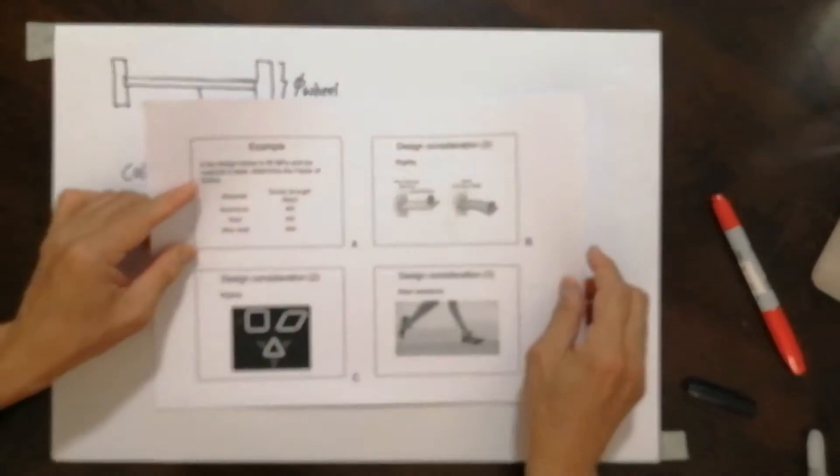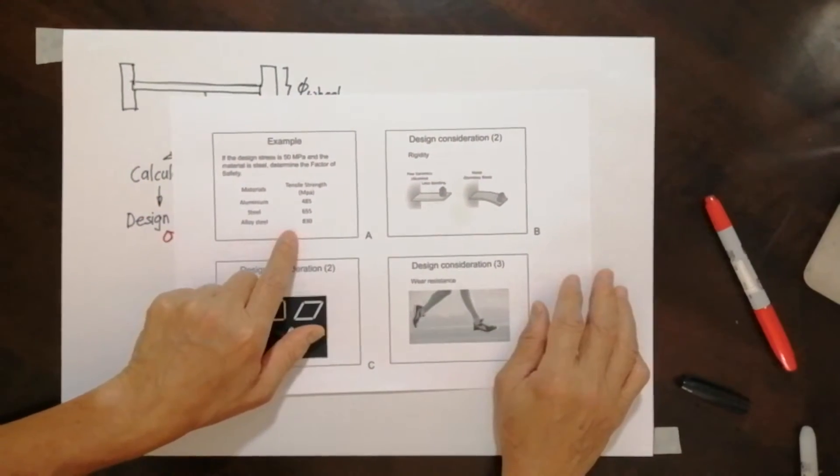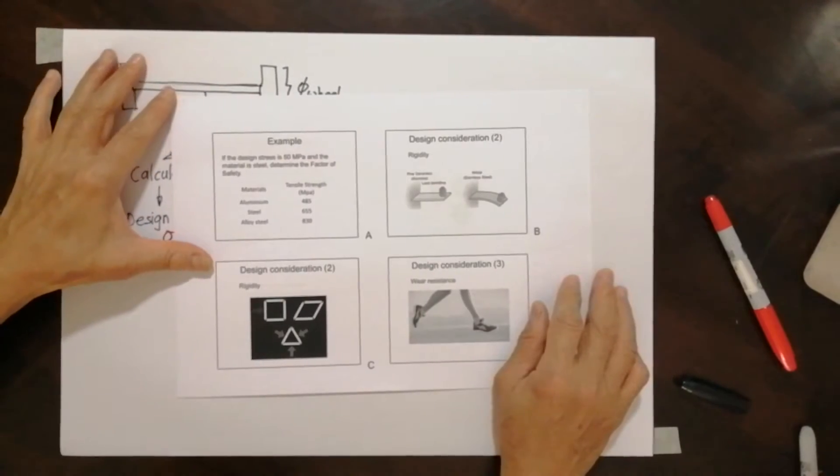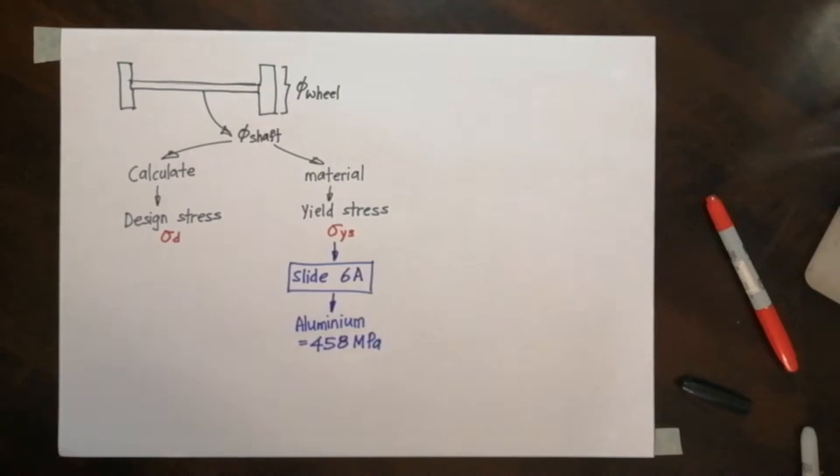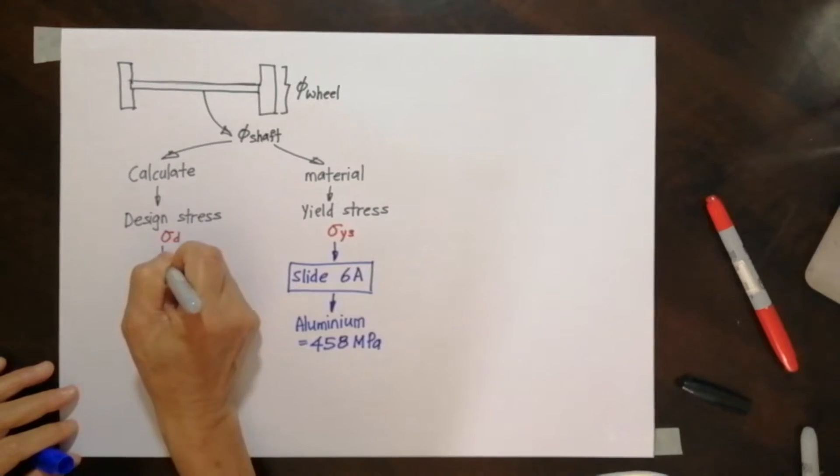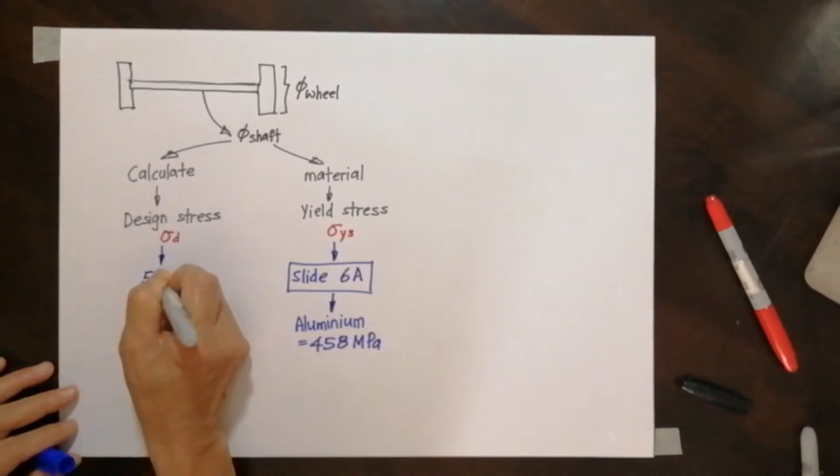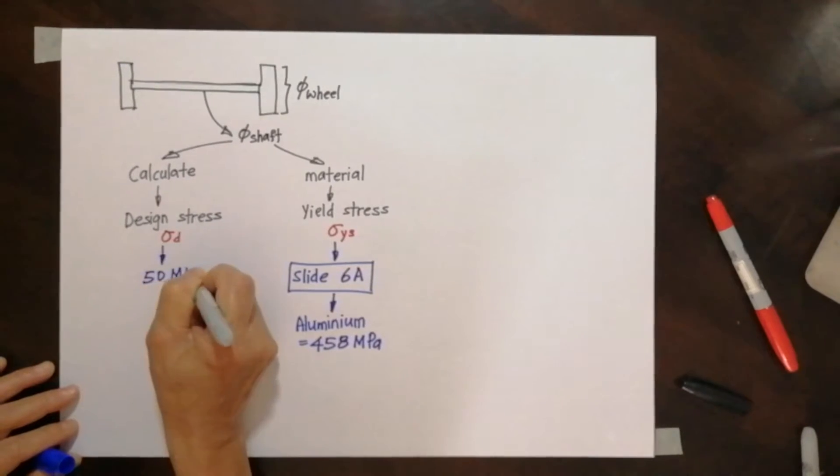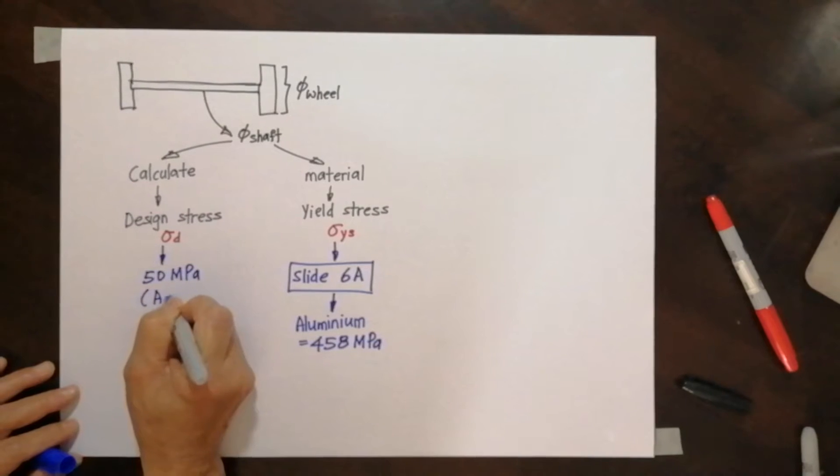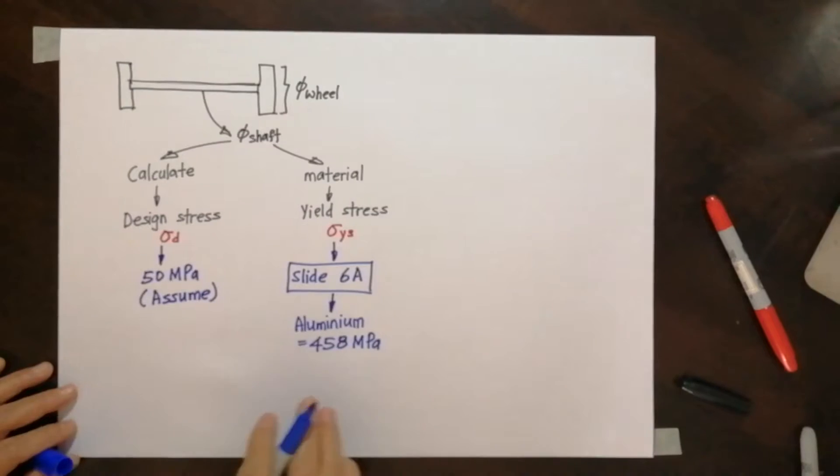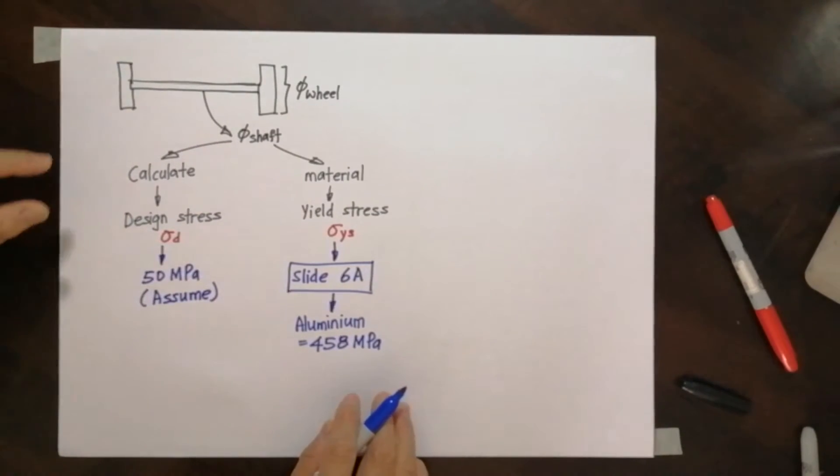And you come across this table. That's where we got the number from. Now let's say we calculated the design stress to be 50 megapascals. I'm assuming in this case because I did no calculation, so let's assume after calculating you've got this number.